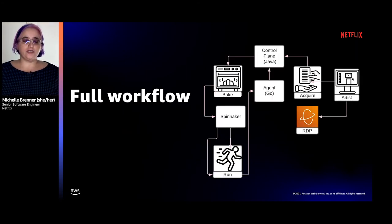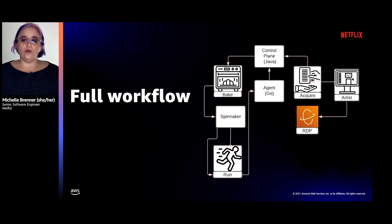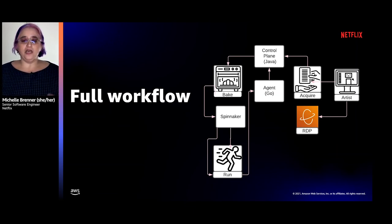To put the full workflow together: the workstation starts with baking the AMI, when the majority of configuration happens. Then Spinnaker handles fleet management by turning the AMI into a workstation during the run stage. After that, the agent starts up and makes the workstation available for acquisition. Once a user requests a workstation, they connect to it via the remote display provider. When they're done, the workstation gets terminated and the cycle starts again. The system is designed for artists and everyone who supports them — artists can get onboarded regardless of geographic location, technical directors can quickly modify configurations, and pipeline engineers can build on top of the platform.